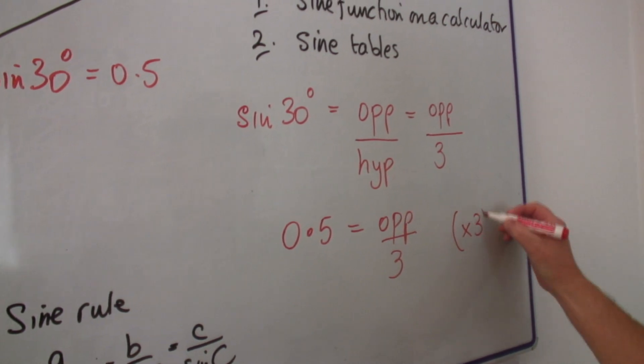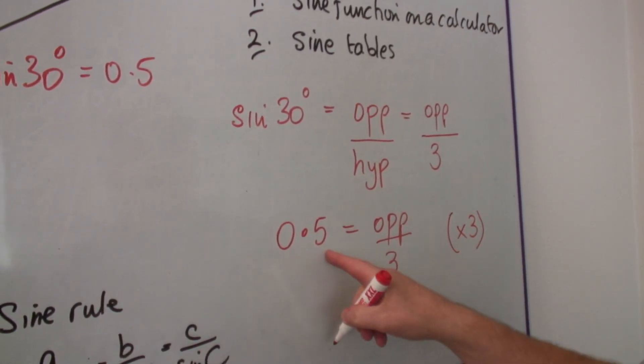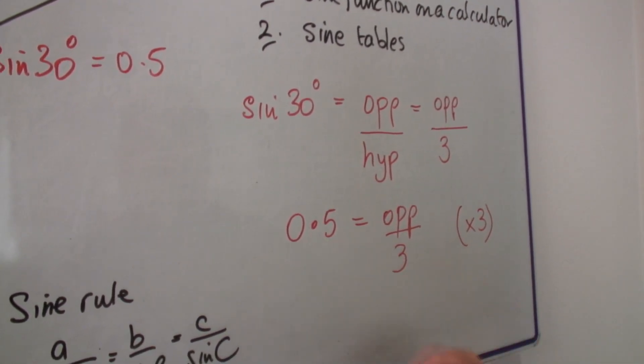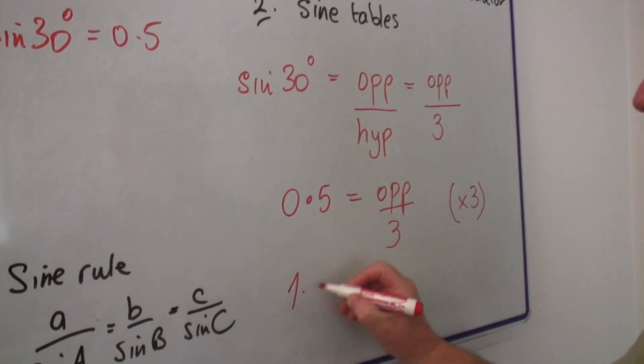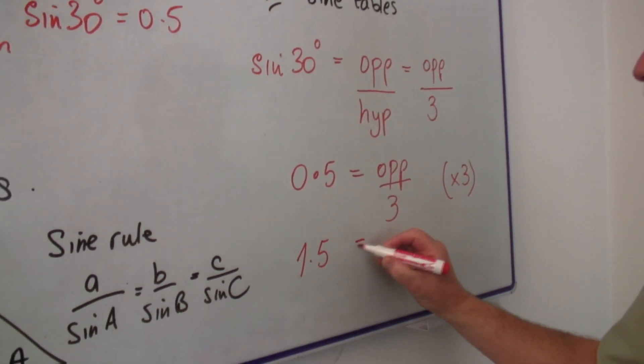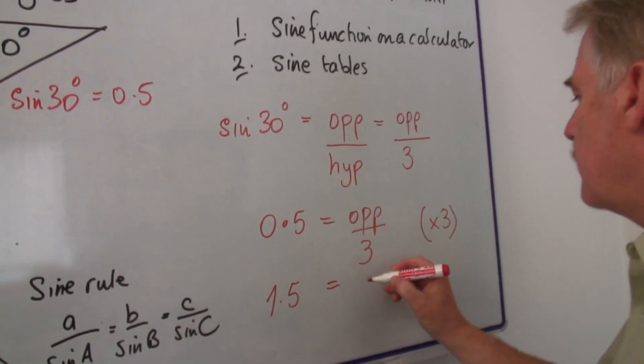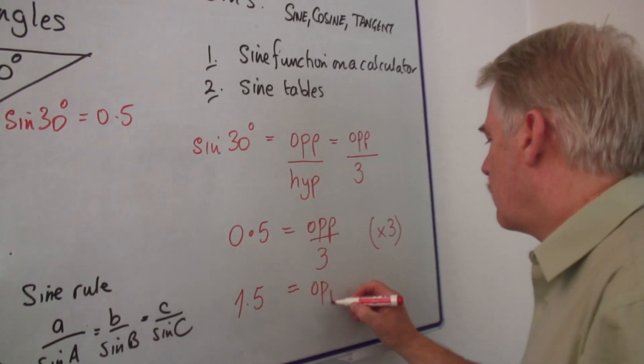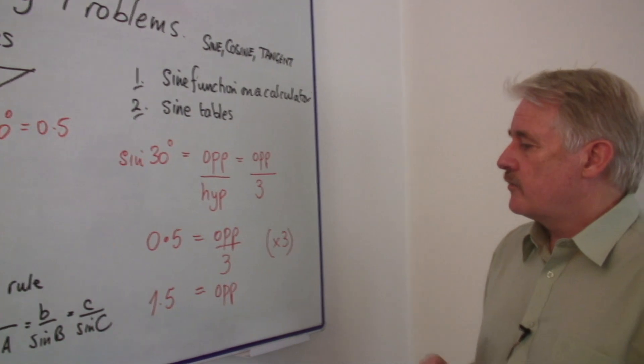then 0.5 times 3 is 1.5, which will be equal to the opposite side. So 1.5 is the length of the opposite side.